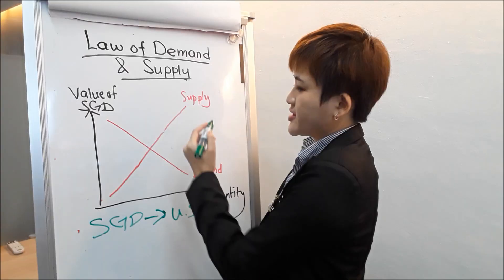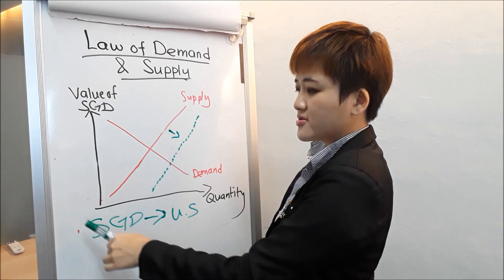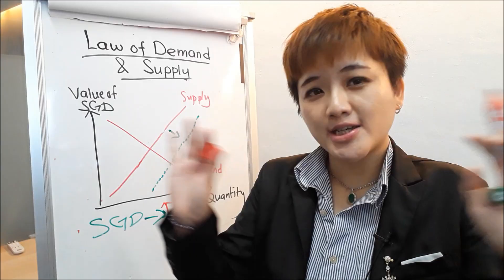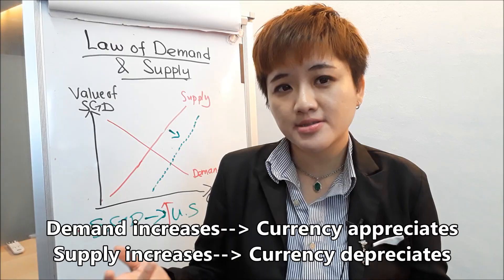If Singapore wants to buy more from the United States, the supply of Singapore dollars increases, the curve shifts right, Singapore dollar depreciates, and this increases the demand for USD — so the dollar goes up. To put it simply: when the demand for a currency increases, the price goes up. When the supply of a currency increases, the price goes down.